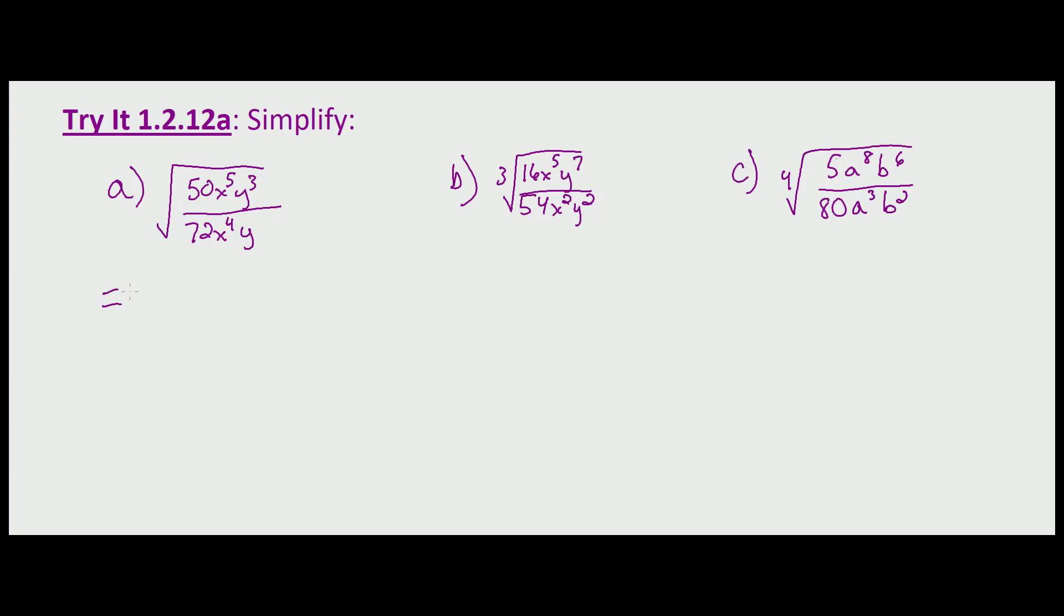We want to end up with perfect squares underneath, so we see that this simplifies: 50 and 72 have a common factor of 2, so 50 divided by 2 is 25, 72 divided by 2 is 36. Then x to the fifth over x to the fourth is simply x to the 5 minus 4, which leaves us with x. And y cubed over y is y to the 3 minus 1, which is y squared. We could separate this into separate radicals, but I'm going to skip that step and just recognize each factor is its own radical.